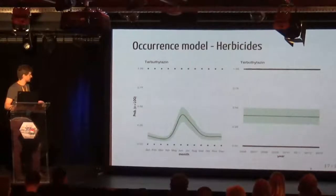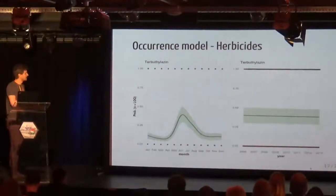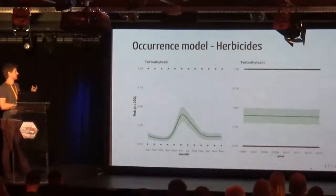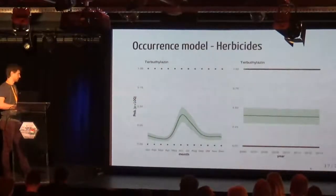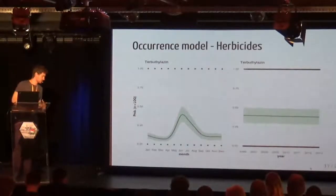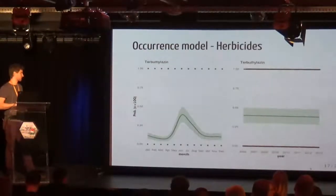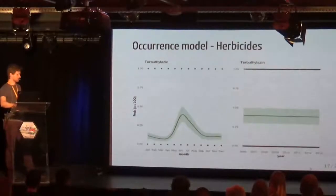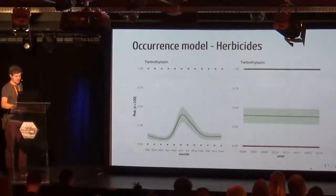Coming directly to results — for example, the herbicide terbuthylazine: on the y-axis you have the probability that the fit is greater than the limit of quantification. We can nicely model its occurrence and we see it is most frequent in June and July, which is consistent with the application of the substance. Over the years we don't see any change — the ratio of quantifications stays rather constant.